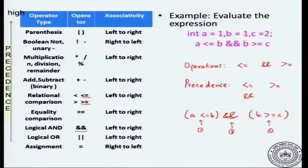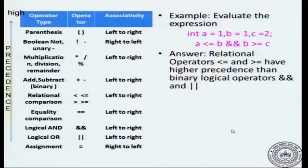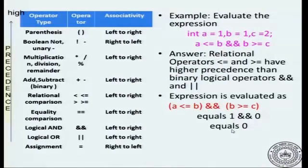Conceptually, using just precedence and associativity rules, this is how the expression should be evaluated. When we evaluate it: a less than or equal to b is 1 less than or equal to 1, so that is 1. b greater than or equal to c is 1 greater than or equal to 2, so that is 0. So this becomes 1 AND 0, which is 0.